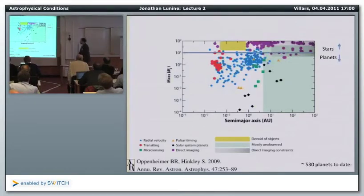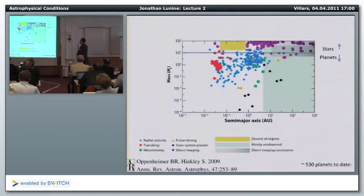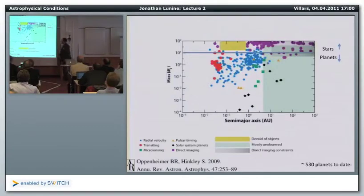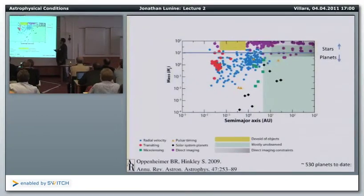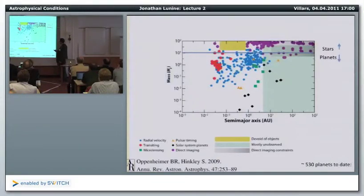This is a plot from 2009 summarizing mass versus semi-major axis of known planets — solar and extrasolar. Solar system planets are shown as black diamonds; extrasolar planets in various colors by discovery method. These are log-log plots. Jupiter sits at 5 AU, and Earth is about 1/300th the mass of Jupiter at exactly one astronomical unit.